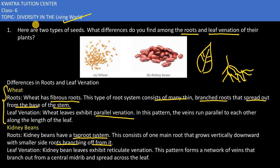What is the main difference between the wheat roots and the kidney beans roots? The wheat has fibrous roots, whereas the kidney beans have tap roots.